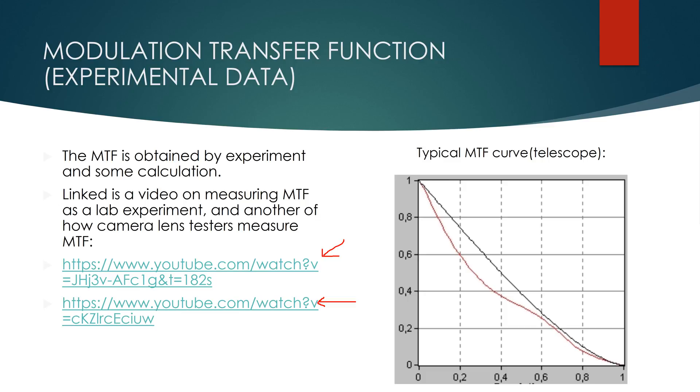On the right you have the plot of a modulation transfer function for a telescope. The black line is for a perfect telescope and the red line is for a typical telescope. I will go into more details on the next slide.